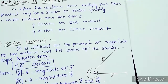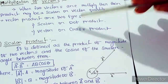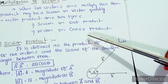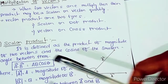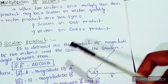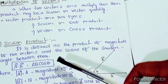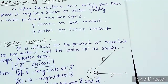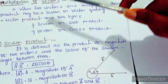There are two types of vector products: the scalar product and the vector product, also called the cross product. The scalar product is defined as the product of the magnitudes of the two vectors and the cosine of the smaller angle between them.